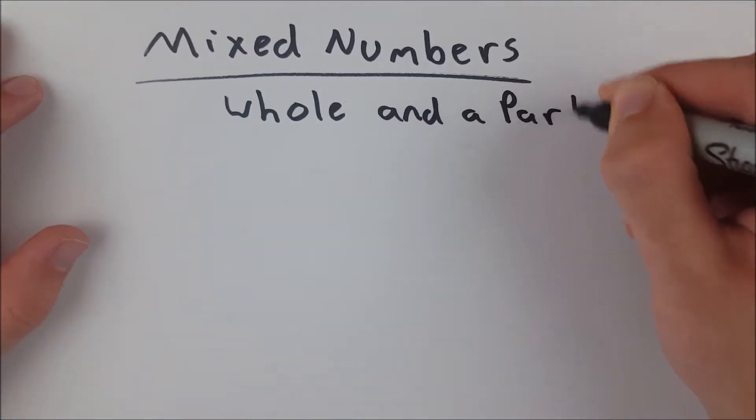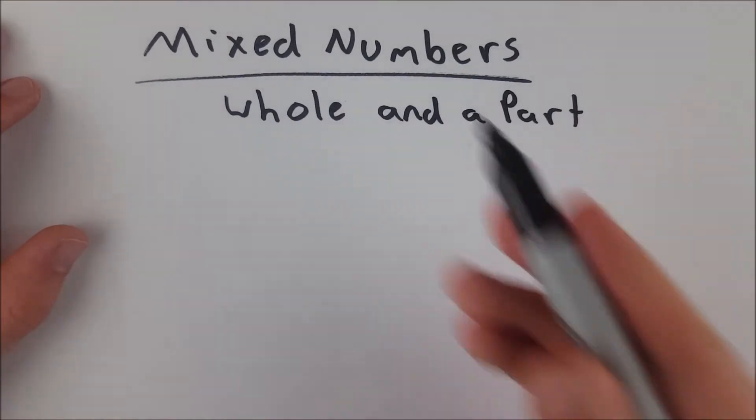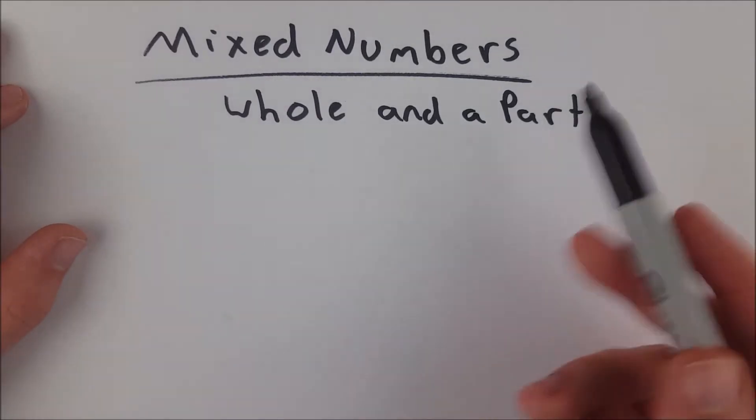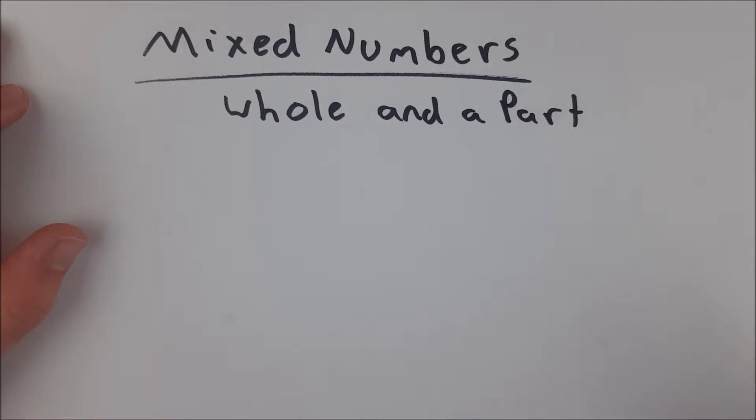So if we have a number like three, three slices of pizza, you can't represent that with a mixed number because you've only got a whole. Let's say you ate half a slice of pizza. I don't know why anybody would ever do that, but again you couldn't represent that as a mixed number because then you've only got a part and no whole.